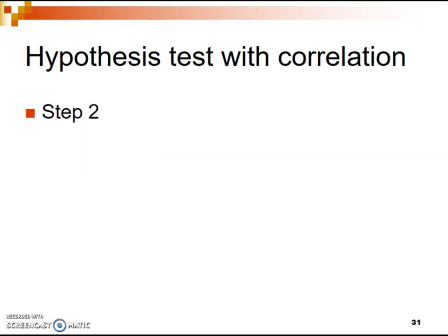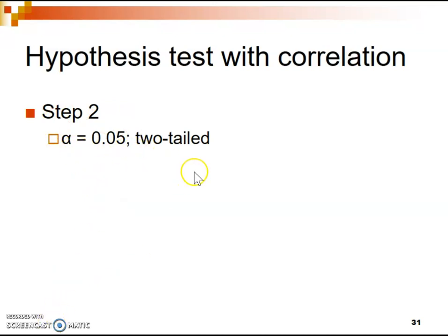Now let's set up our criteria for how we're going to make our decision. In step two, the things we want to report are first our alpha level. Our alpha level of 0.05 represents that five percent of the time we're just going to get that correlation value by chance alone, even if there is no relationship. The two-tailed test refers to the fact that we're looking for any type of correlation — not specifying either positive or negative. SPSS defaults to a two-tailed test, so we'll focus on that.